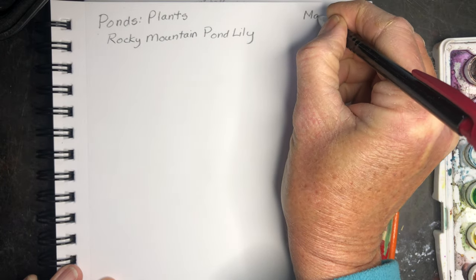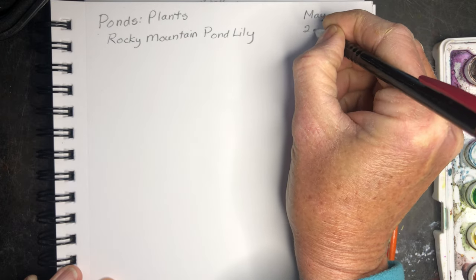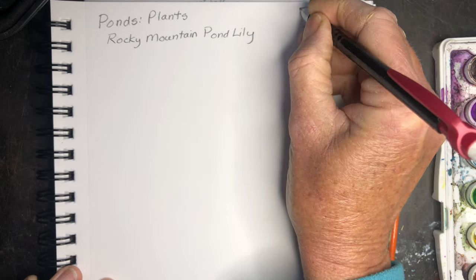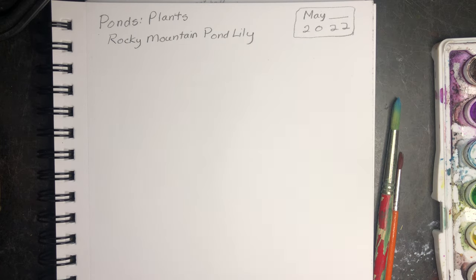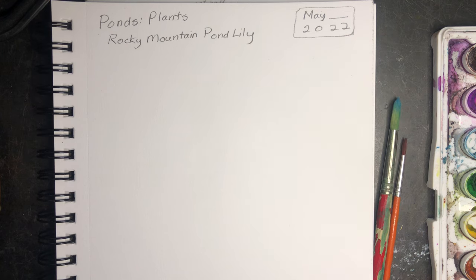Write your date whenever you are doing this Nature Journal project. It would be fun to see if you can find one of these — maybe at the pond at Rockledge Park. If you're able to go out there and find the actual pond lilies, then that would be great to draw from real life. I've posted a botanical illustration of a pond lily and the different parts of it.